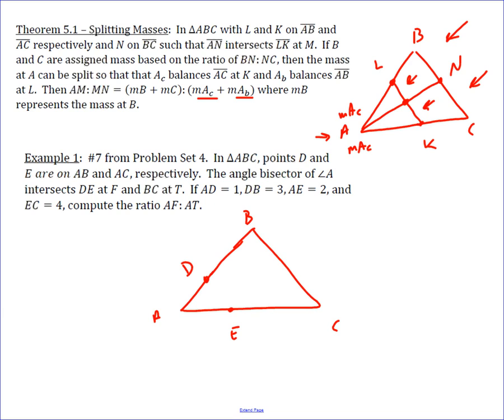And you're given that AD is 1, DB is 3, AE is 2, and EC is 4.